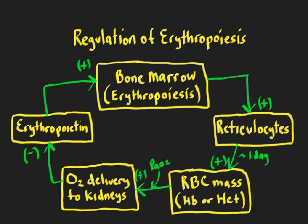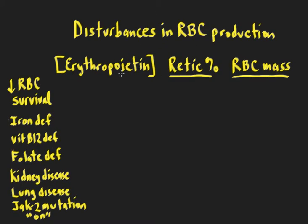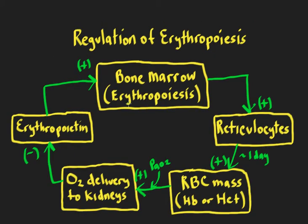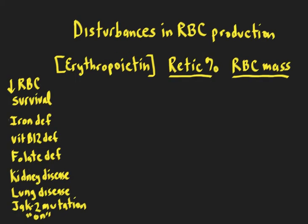With this feedback system we can predict important clinical examples involving perturbations. We can look at three key values: erythropoietin levels in the blood, reticulocyte percentage or reticulocyte count, and red blood cell mass. Starting with the example of decreased red blood cell survival — going back to the diagram, this disturbance starts at the red blood cell mass. Instead of a typical red blood cell lifespan of about 120 days, that would be markedly reduced. This occurs in conditions like hemolytic anemia, where there is increased red blood cell destruction. So we start with the red blood cell mass decreasing.